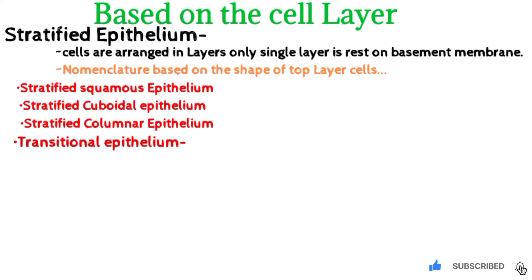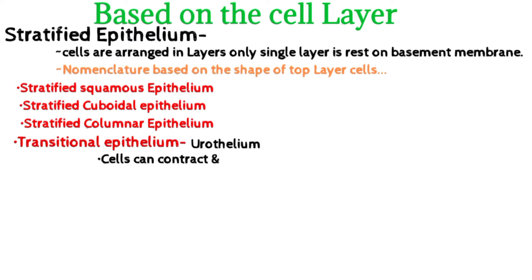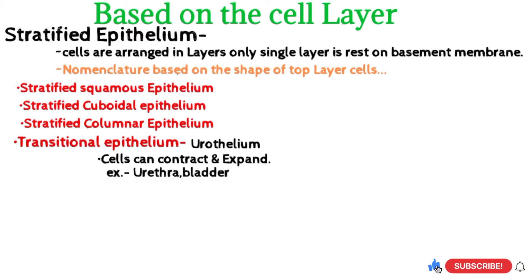Transitional epithelium is also known as urothelium because it is present in the urinary system. Its cells can contract or expand. Examples include the urethra and urinary bladder.